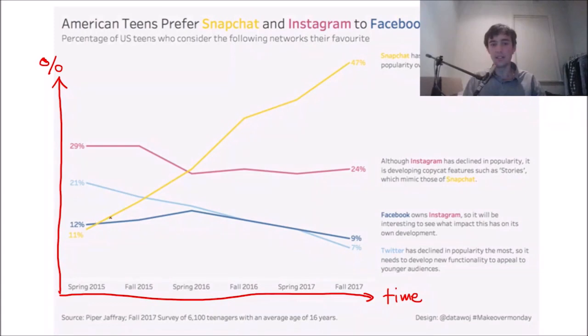So this one would be percentage. And this one would be time. The reason why I know that is because this is 11%, 12%, 21%, 29%, the percentage is going up as you go higher. And over here, it's 47%. So 100% would be off the screen somewhere. Time, these are the months going from left to right. So it's still a regular line graph. It's just that it's got four lines on it instead of just one, but that's okay.